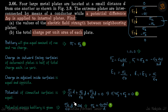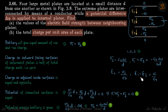We now have three equations and three variables: sigma one, sigma two, and sigma three. Solving these gives us the values of sigma one and sigma three. Sigma two we already found. The electric field can be calculated from these: E1 and E3 are sigma one by epsilon, and E2 is sigma two by epsilon.